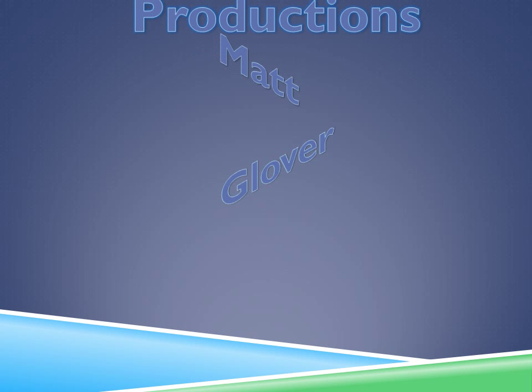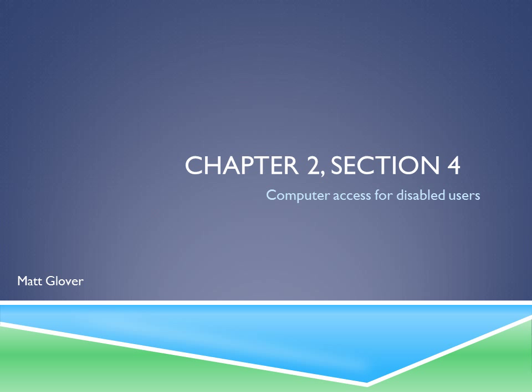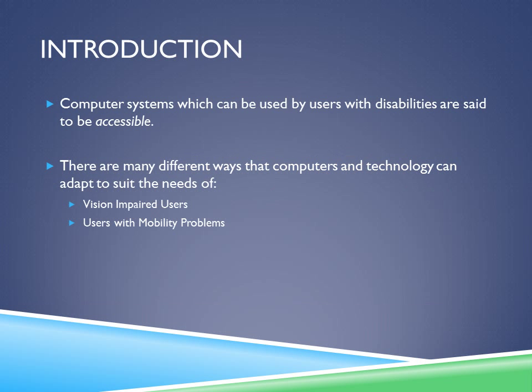Matt Glover, GloverDocs.com. Chapter 2, Section 4: Computer Access for Disabled Users, by Matt Glover. Introduction: Computer systems which can be used by users with disabilities are said to be accessible. There are many different ways that computers and technology can adapt to suit the needs of vision-impaired users and users with mobility problems. Throughout this presentation, I will talk about the different uses of technology that we can use to address their problems.